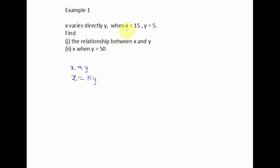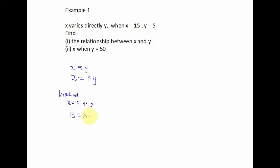Writing x with a proportional constant gives us x is equal to k times y. After this step, we substitute our values. We are told x is equal to 15 and y is equal to 5. So we have 15 equals k times 5.